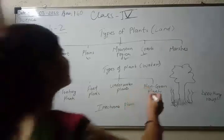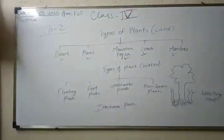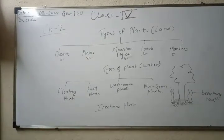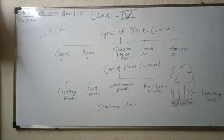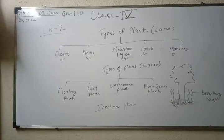Marshes are those types of areas where the land is covered with waterlogged soil, and plants in this area develop breathing roots to survive. So we are done with all the plants found on land in different types of regions and what adaptations they have. Now we are going to start with the next topic: aquatic plants.